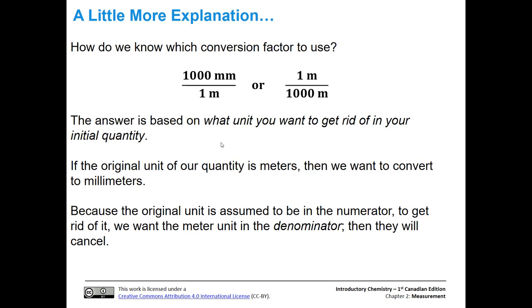How do we know which conversion factor to use? That is the whole issue. You're going to use this concept throughout this course. The conversion factor you use depends on what unit you want to get rid of in your initial quantity. If you want to get rid of meters, choose the conversion factor with meters on the bottom so it cancels. If our original unit is meters and we want to convert to millimeters, we choose the conversion factor with meters in the denominator and millimeters in the numerator, so we end up with millimeters as our final answer. Our original unit is assumed to be in the numerator; to get rid of it, we want that unit in the denominator so it will cancel.